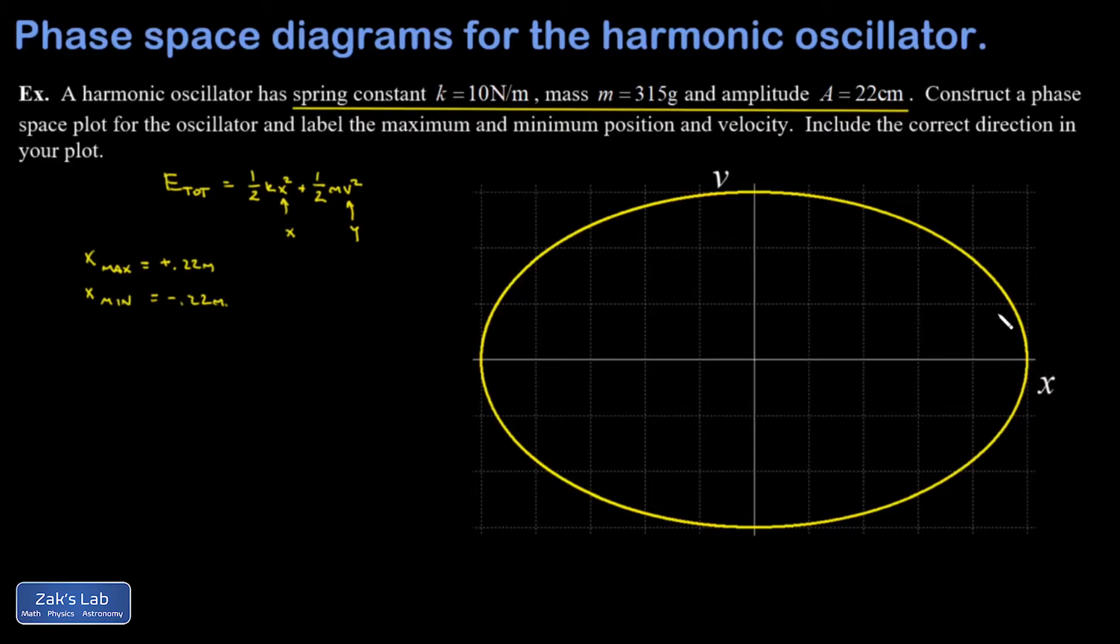If I look on my plot, the vertical coordinate is v. That vertical coordinate v is equal to 0 when I hit my maximum positive position over here of plus 0.22 meters. v is equal to 0 again when x reaches its maximum negative value, or the minimum value of negative 0.22 meters.